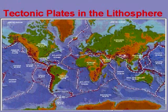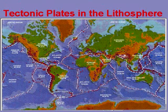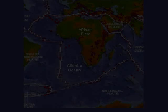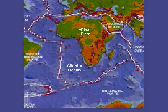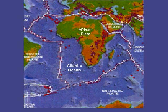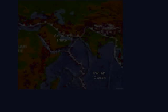Earlier, I talked about the tectonic plates in the lithosphere. These plates have been identified and plotted on this map. This is the African plate. As you can see, it extends far out into the Atlantic Ocean — it is bigger than just the land mass of the continent.